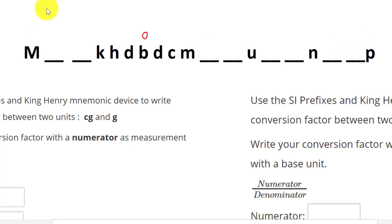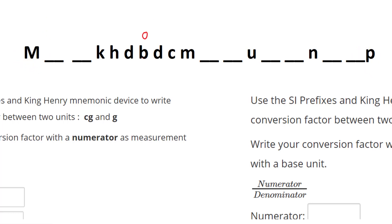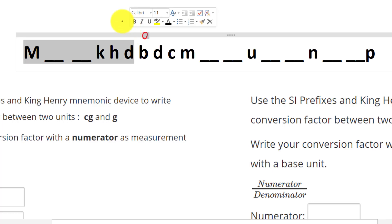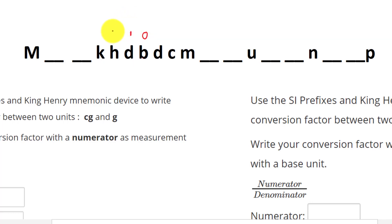One way to memorize that going towards Mega the exponents increase is: look at Mega — it's capitalized, but pickle is not. So, going towards Mega, this one is 10 to the 1, 10 to the 2, 10 to the 3, 10 to the 4, 10 to the 5, 10 to the 6.